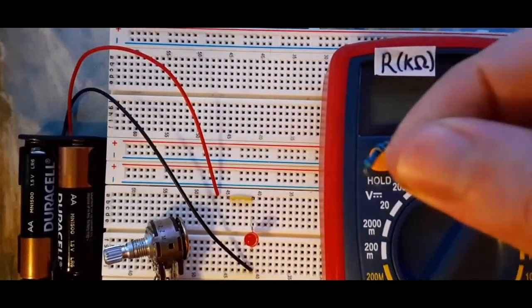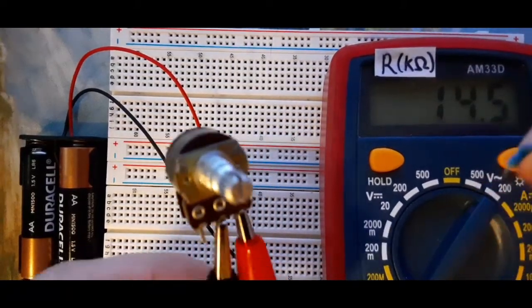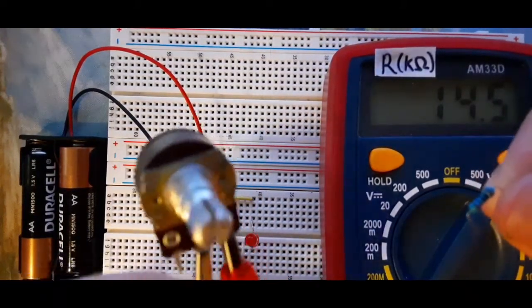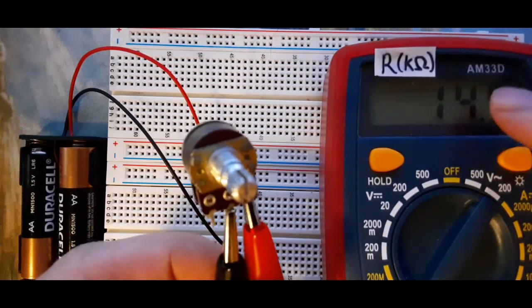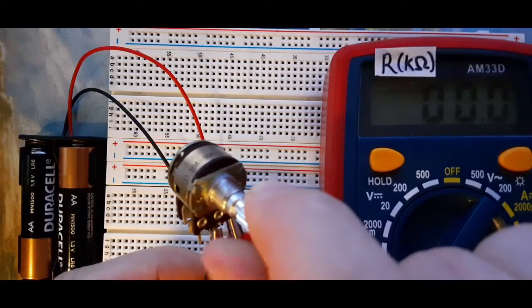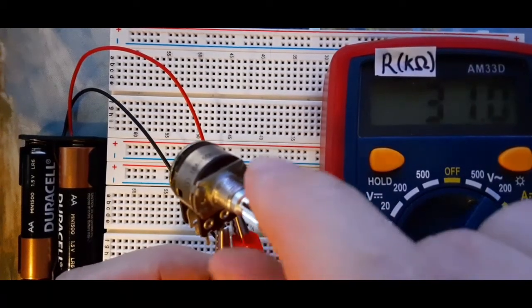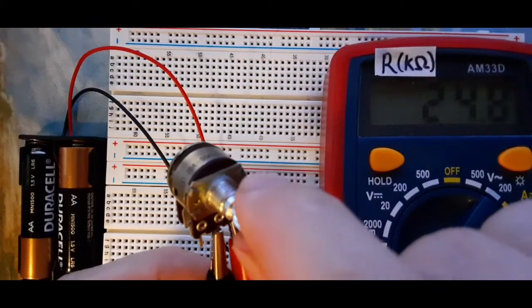So this is a resistor, an actual resistor, and this is a potentiometer, which acts as a variable resistor. We could see on the multimeter in kiloohms how this resistor varies as I turn the knob. So we could use this as our knob to control the brightness of our flashlight circuit.